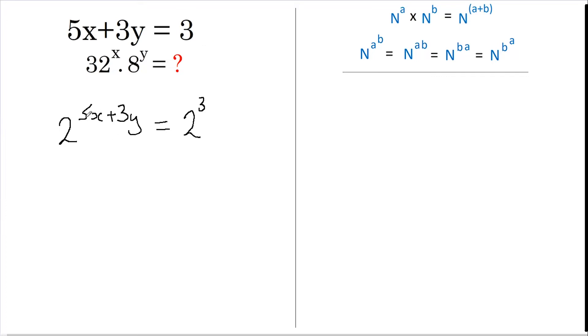We now just have to rearrange this so that we get 32^x times 8^y.